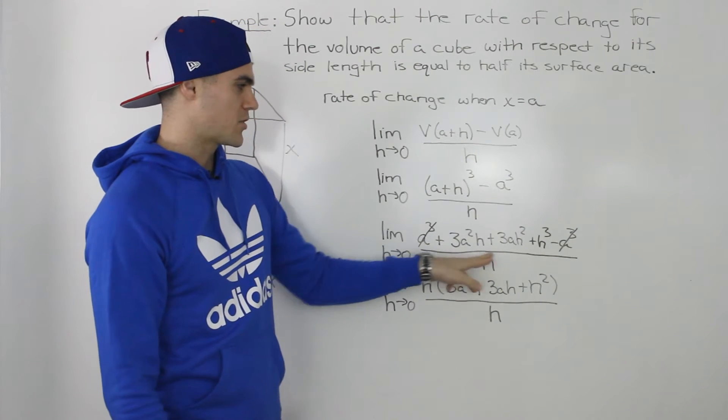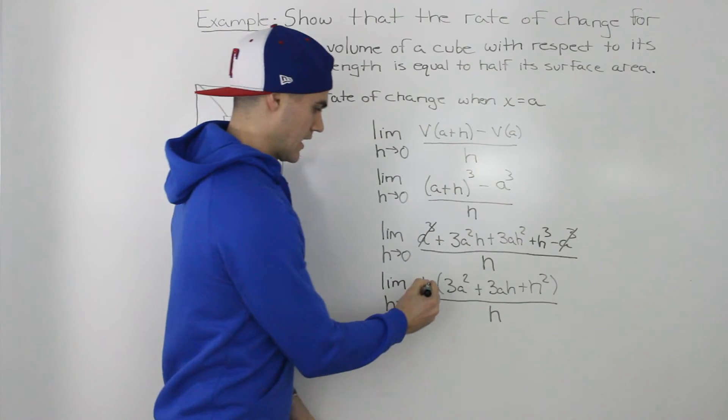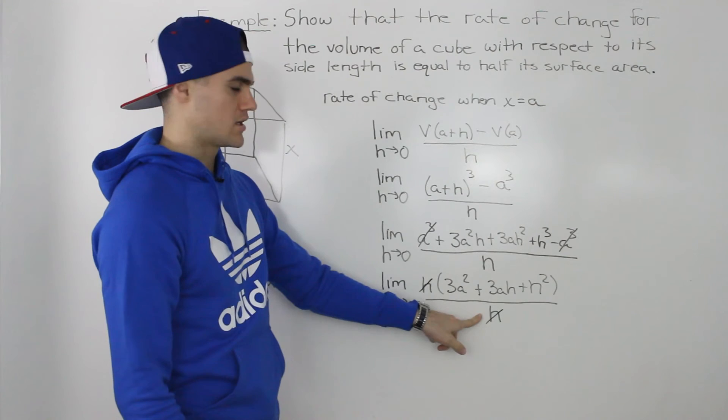And then with the remaining expression in the numerator notice that we can factor out an h from each of these terms and now the h's cancel out and we get rid of that h in the denominator.